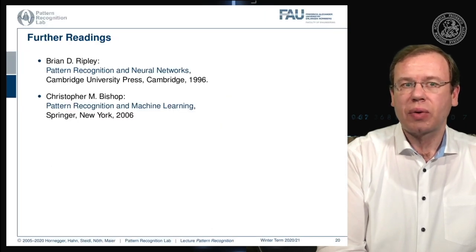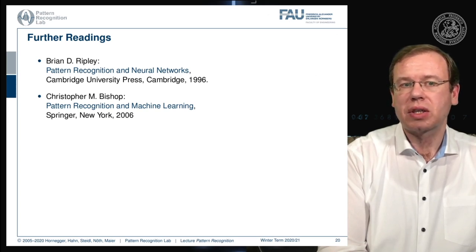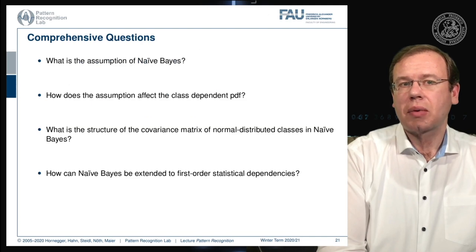There are further readings available: Pattern Recognition and Neural Networks, as well as Bishop's book Pattern Recognition and Machine Learning both cover this topic. I also have a couple of comprehensive questions to help you in preparation for the exam. I hope you found this small excursion to the Naive Bayes classifier useful — we saw that we can use independence assumptions to reduce the number of parameters and simplify our estimation problems. Thank you very much for listening, and looking forward to seeing you in the next video.